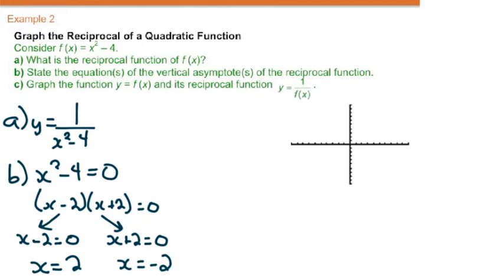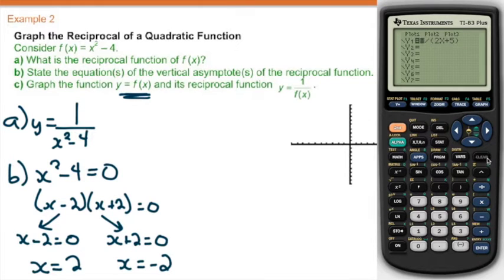Question C, graphing the function and its reciprocal. We'll do the function to begin with. Clear out the one I had in earlier. We'll graph x squared minus 4. It looks roughly like that.